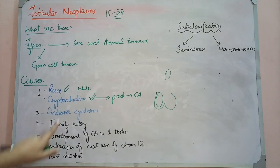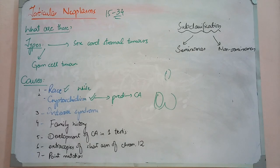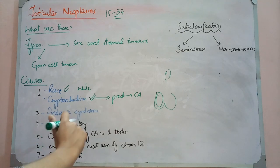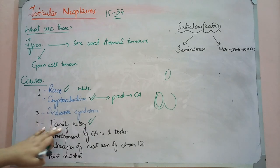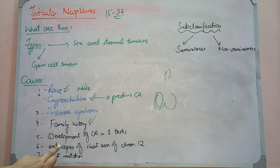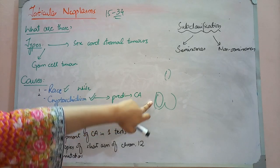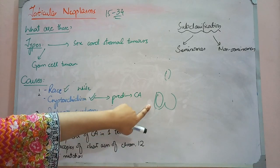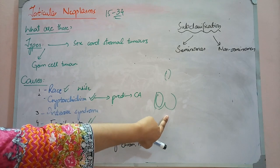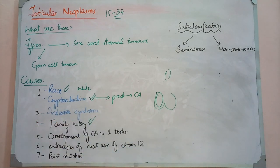Intersex syndromes — such as androgen insensitivity or conditions where both sexes of gonads are developed — cause maldevelopment of gonads and increase the risk of cancer. Then there is a positive family history; if cancer is common in prior generations, risk is elevated. If you have had a testicular tumor on one side, the chances on the other side increase 3 to 5 fold. This is also a significant predisposing factor.